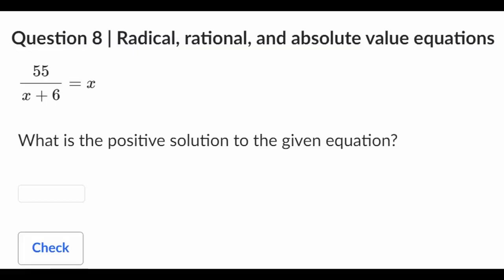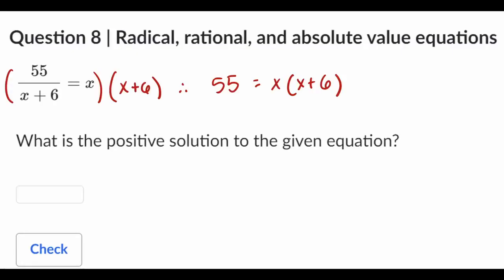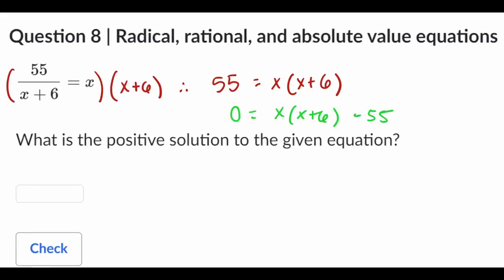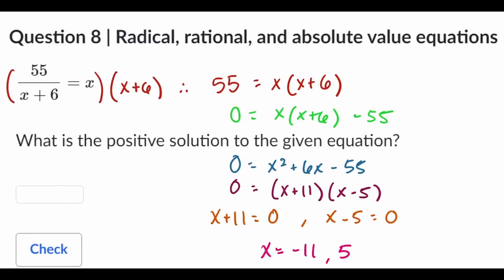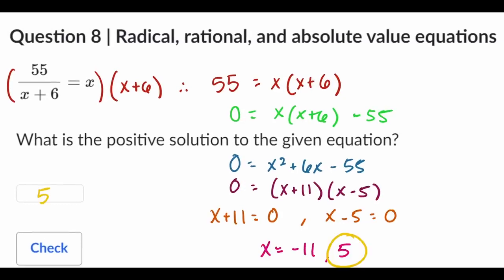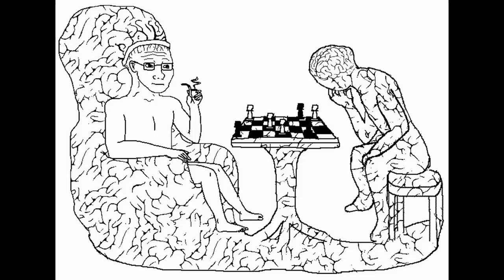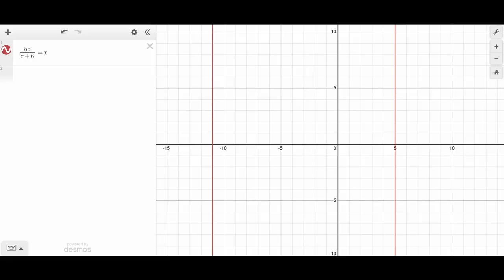Okay, now on to single variable equations. Most people are sheep, and they're going to solve this problem by moving x plus 6 to the other side, subtracting by 55, distributing, factoring, splitting up, rearranging, and picking the positive solution. But sigma males like myself are just going to copy and paste it into Desmos and look at where the vertical line is.